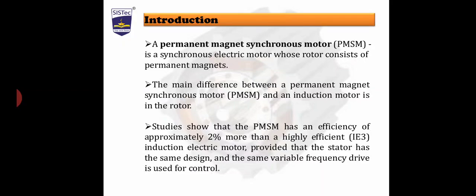We know that the synchronous machine is a doubly excited energy conversion device. What is the meaning of doubly excitation? It means we supply both sides — the stator as well as the rotor. Every rotating electrical machine consists of two main windings: one is called the field winding and the other is called the armature winding. In the case of a synchronous machine, the armature winding is stationary and the field winding is rotating.